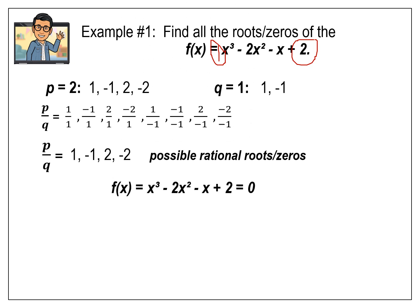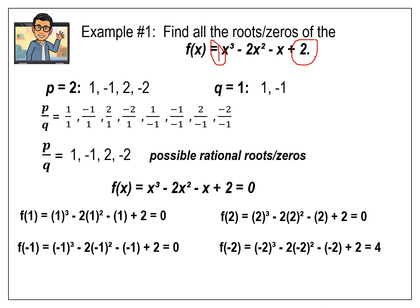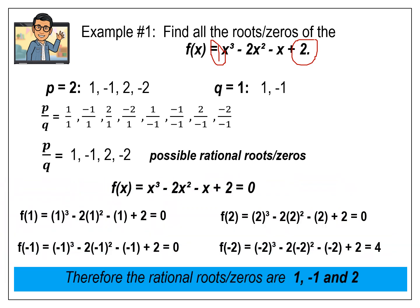Therefore, the rational roots or zeros of that polynomial function are 1, negative 1, and 2.